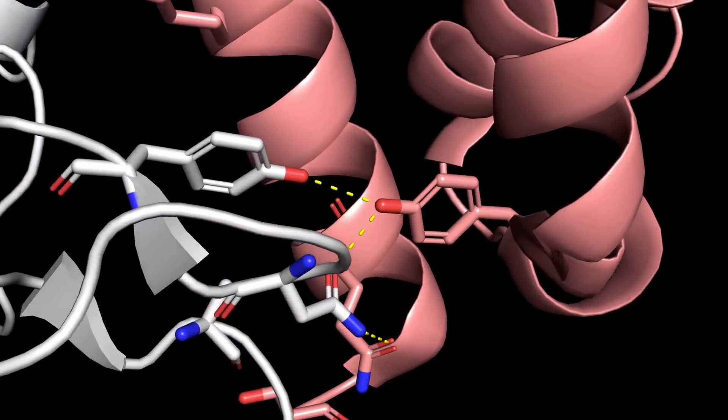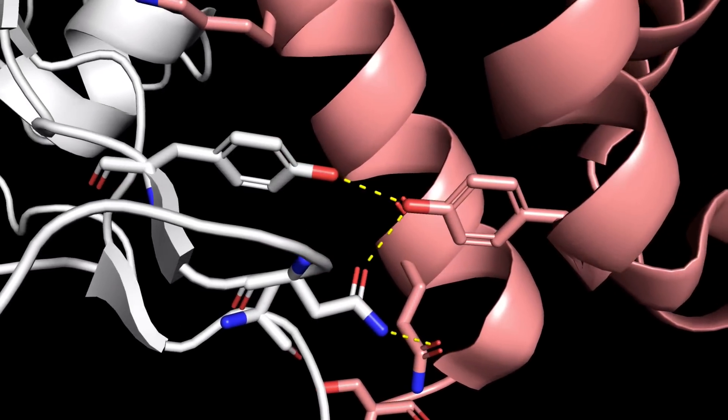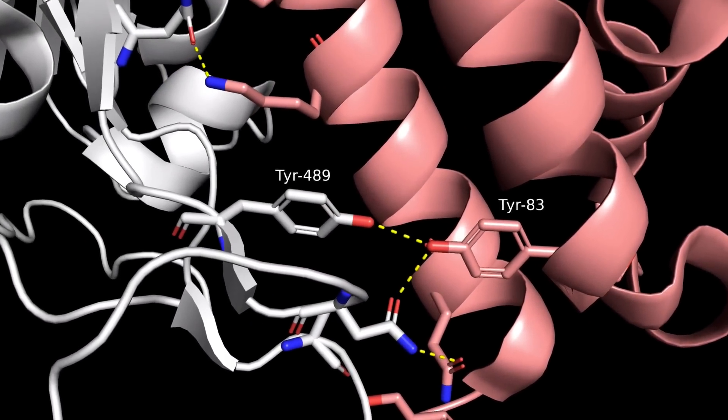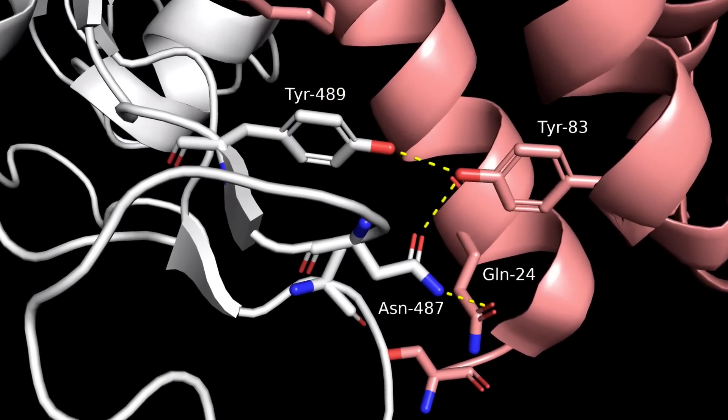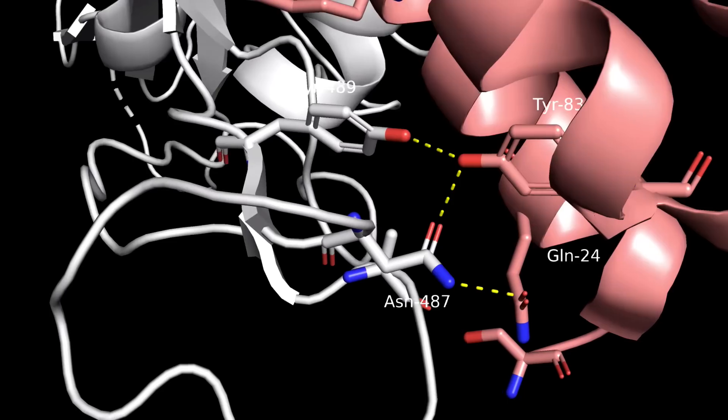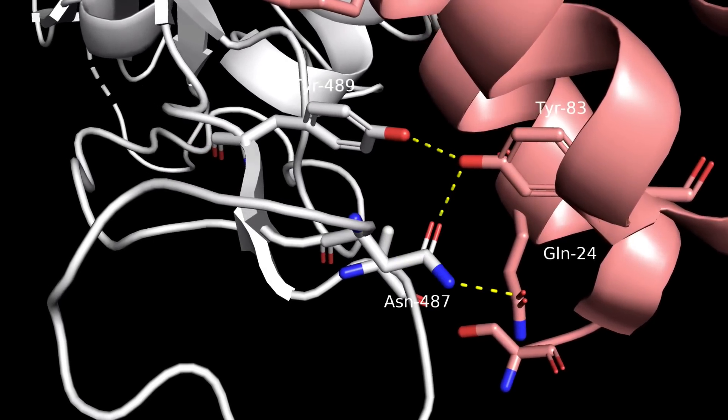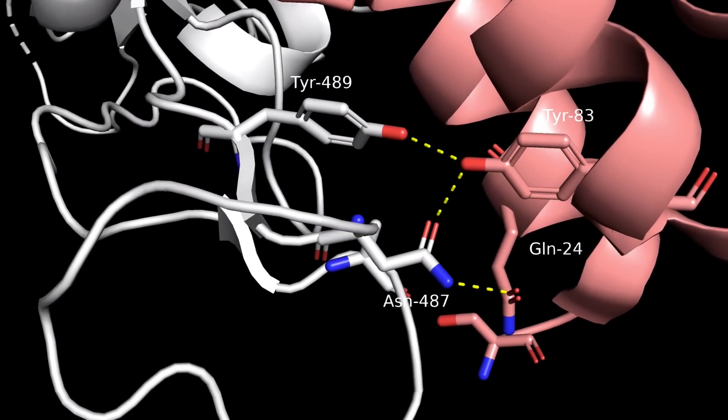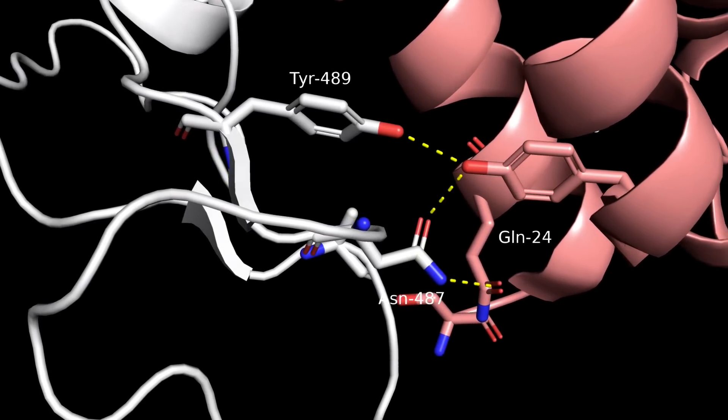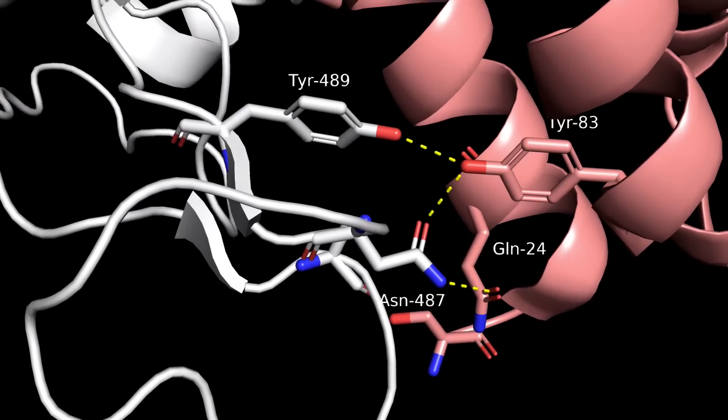For example, we have an extensive hydrogen bonding network at the RBD-ACE2 interface involving these two tyrosine residues. This tyrosine side chain is also hydrogen bonded to the carbonyl of this asparagine side chain, which in turn bonds through its NH hydrogen atom to the carbonyl of this glutamine on ACE2.